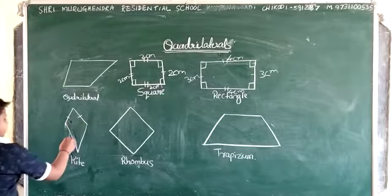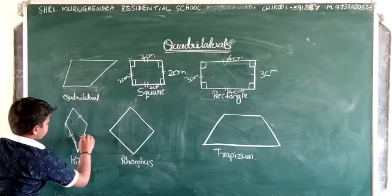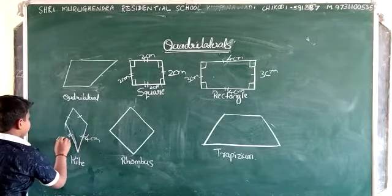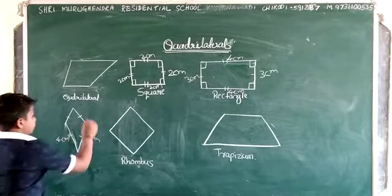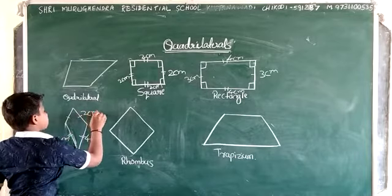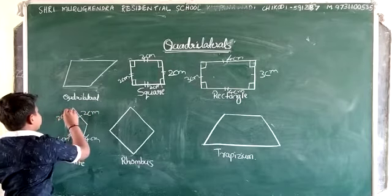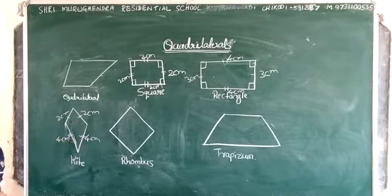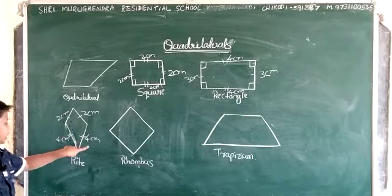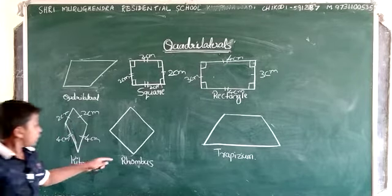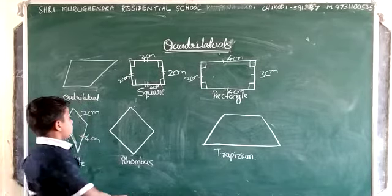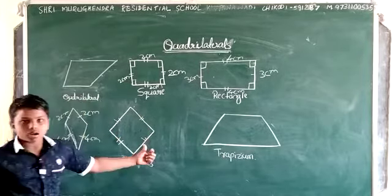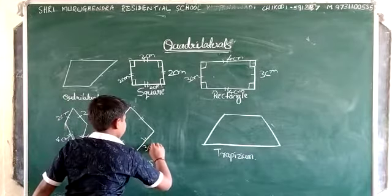And now rectangle. Rectangle means the opposite sides will be equal. If it is three centimeters, this will be also three centimeters. If it is four centimeters, this is also four centimeters. Here the opposite sides are equal. And in this rectangle, the angle should be 90 degrees. The sum of these four right angles will be 360 degrees.